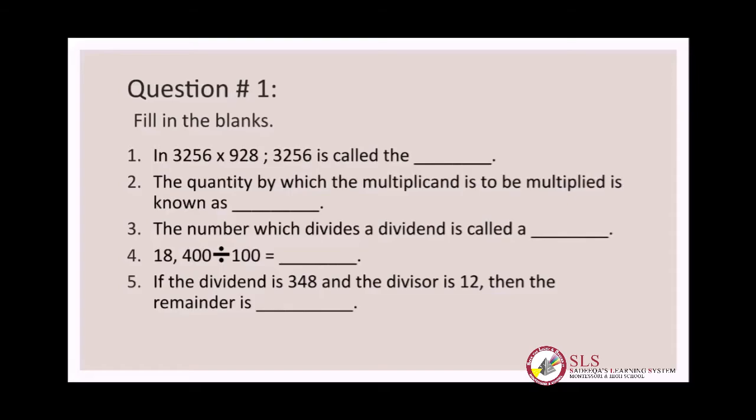Number four: eighteen thousand four hundred divided by one hundred is equal to dash. For this we have to do the rough work — divide eighteen thousand four hundred by one hundred to get the quotient.